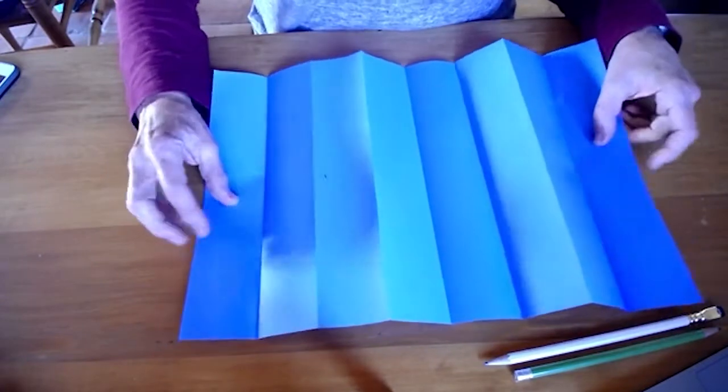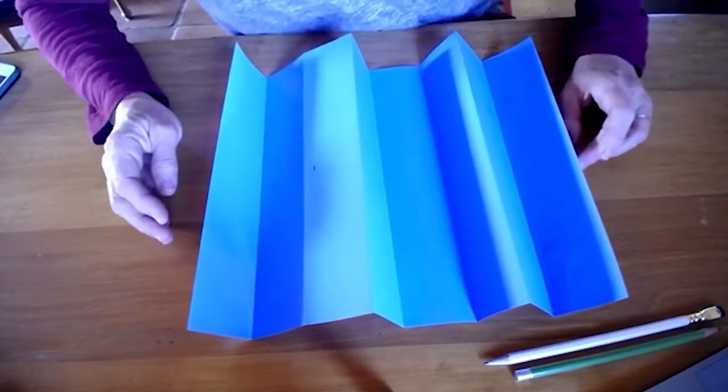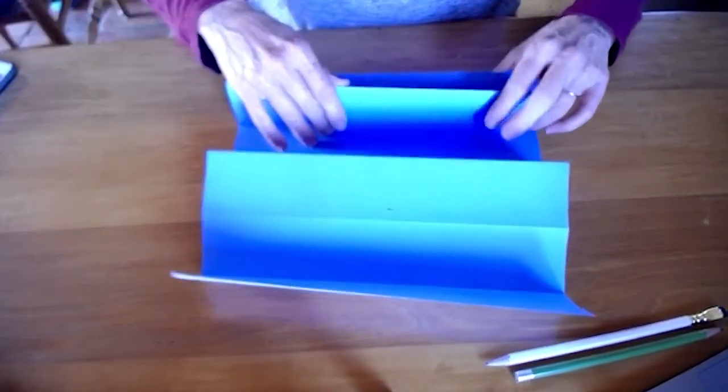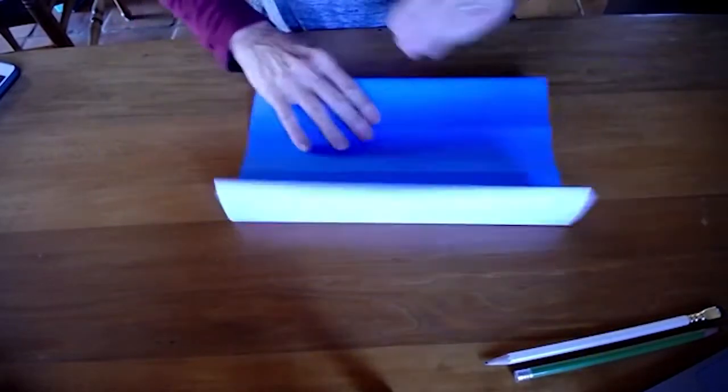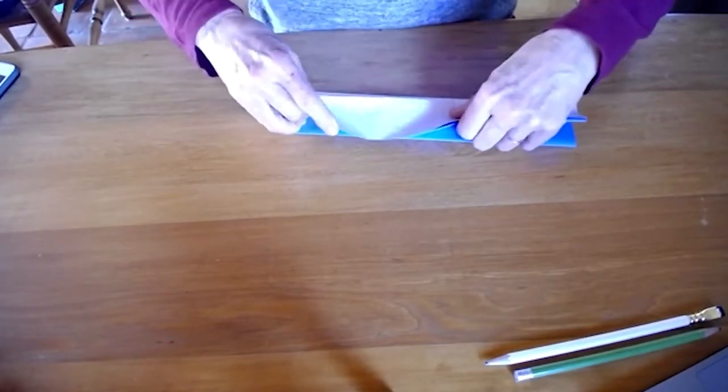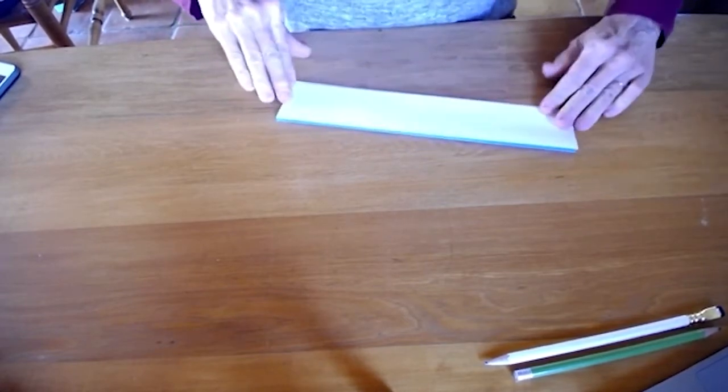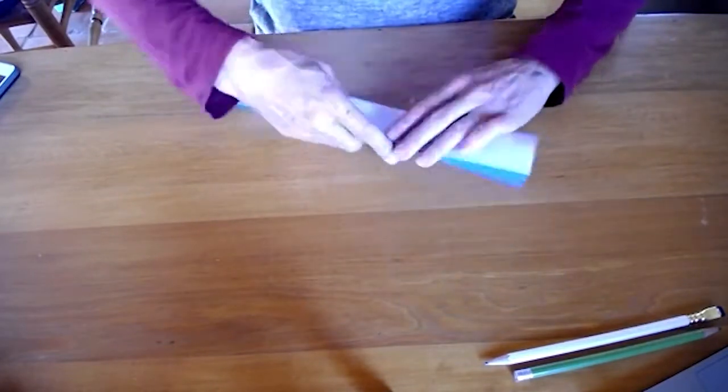So when we open it back up, we have eight panels here. Okay, and then we're going to go ahead and refold it so that it's alternating, we're following the lines that we made creases for, alternating mountain and valley folds like so.